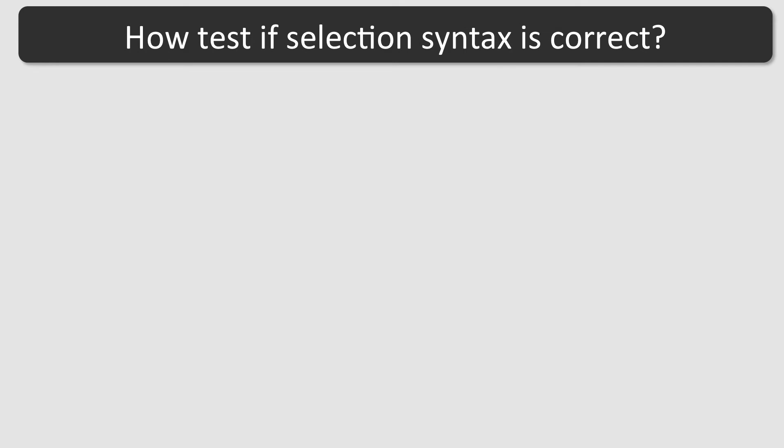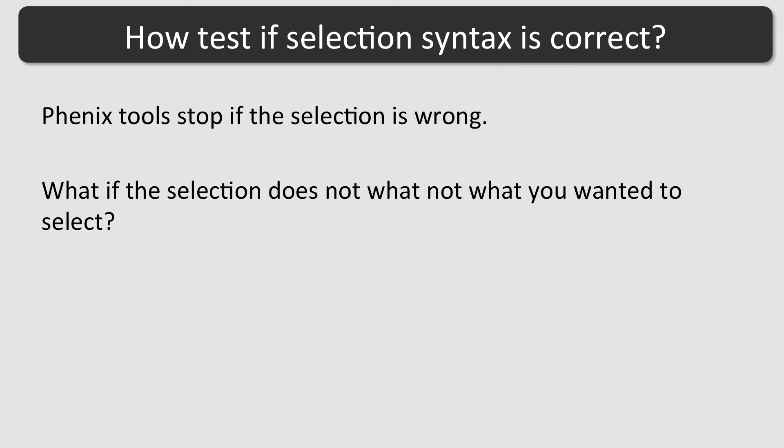Usually, Phoenix stops if the selection is wrong. But what if the selection syntax is correct but does not reflect what you want it to select? Here is a way to test a selection before running a program.